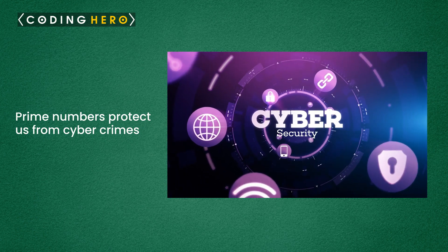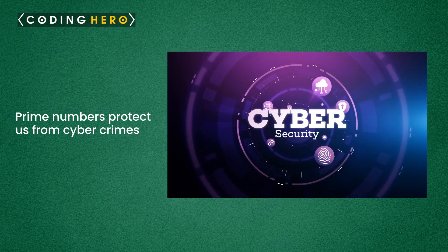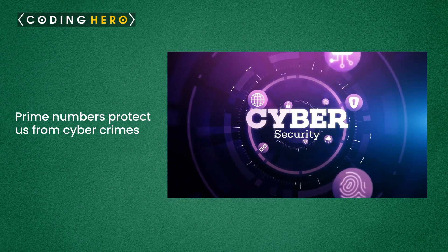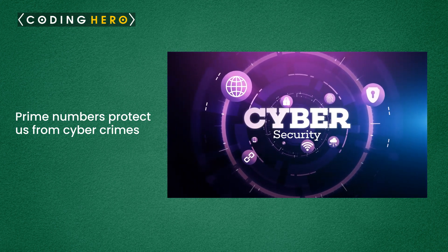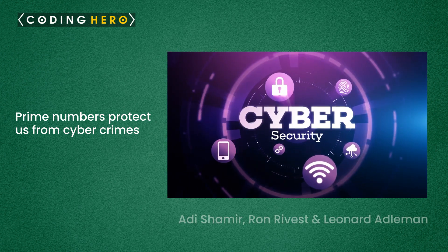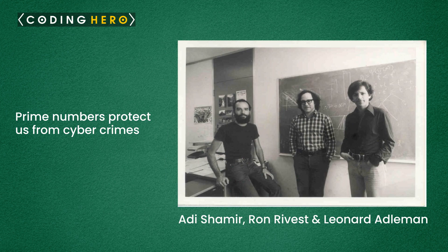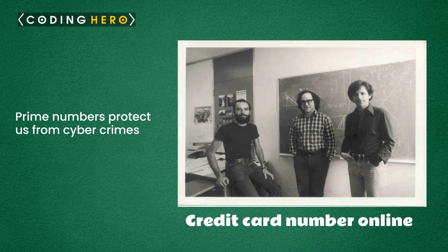Prime numbers protect us from cyber crimes. You might not be aware, but prime numbers keep our accounts and information safe through the RSA encryption system. RSA encryption was invented in 1978 by Ron Rivest, Adi Shamir and Leonard Adleman. The encryption system combines simple known facts about numbers to secure the transfer of information, such as credit card numbers, online.